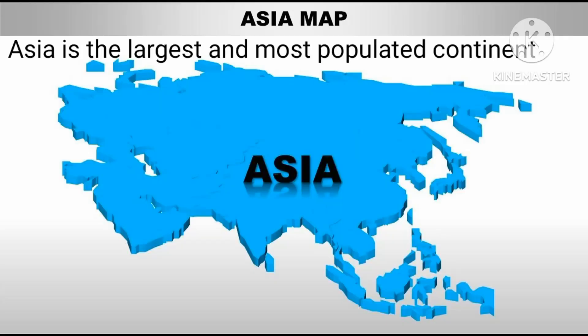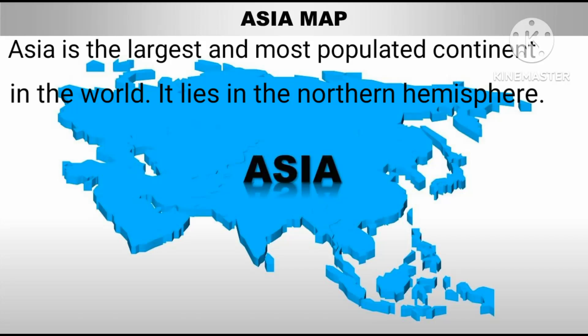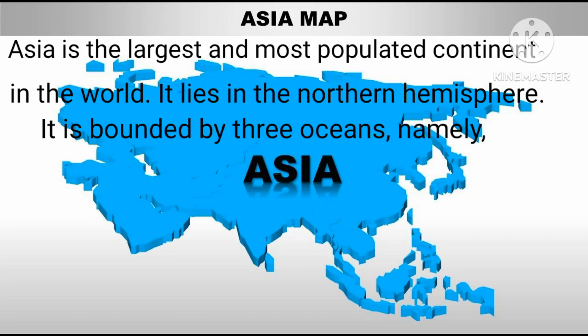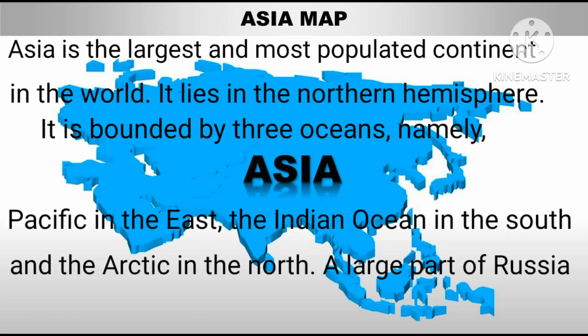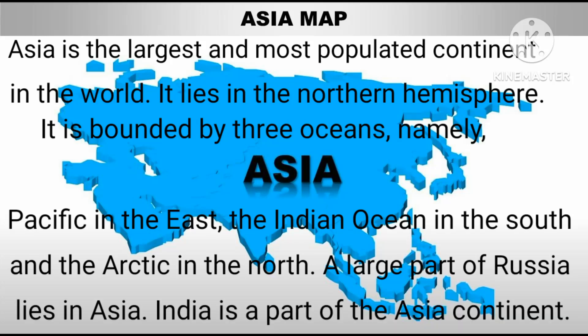Asia is the largest and most populated continent in the world. It lies in the northern hemisphere. It is bounded by three oceans: namely the Pacific in the East, the Indian Ocean in the South, and the Arctic in the North. A large part of Russia lies in Asia.